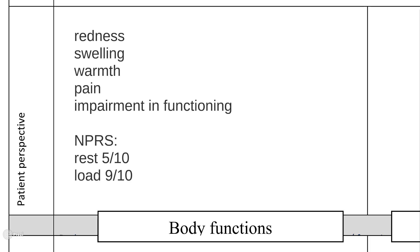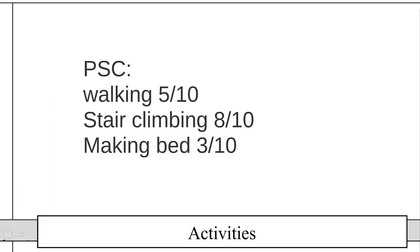Note down values for pain at rest as well as when loaded, and reassess the patient on a regular basis regarding pain to see if there is progress. In the activities section, you are going to write down the patient-specific complaints, so-called PSCs. Ask your patient about three specific activities of daily living that are problematic due to the injury and let the patient rate them on a scale from 0 to 10 — where 0 means no problem and 10 indicates the activity is not possible at all. The PSCs also determine a big part of your assessment and how you construct a treatment later on.